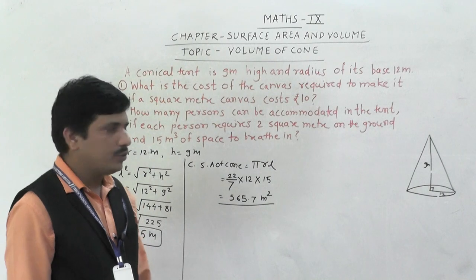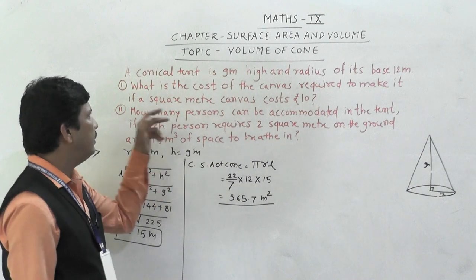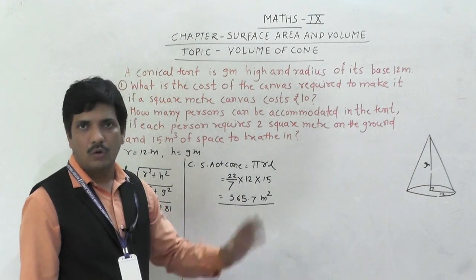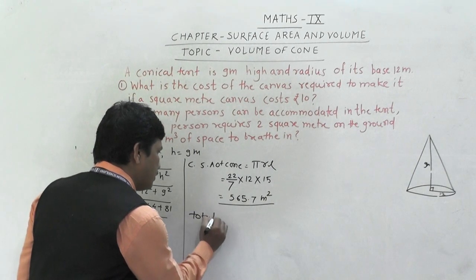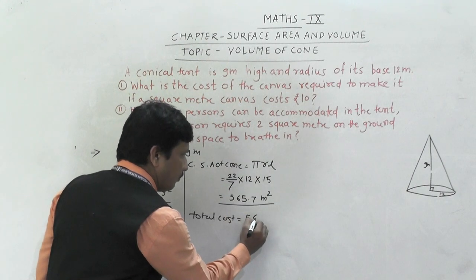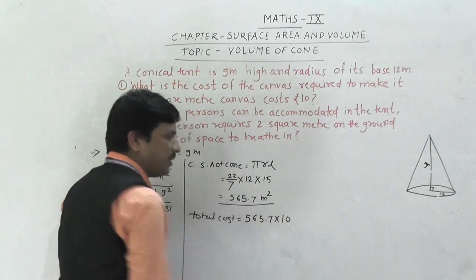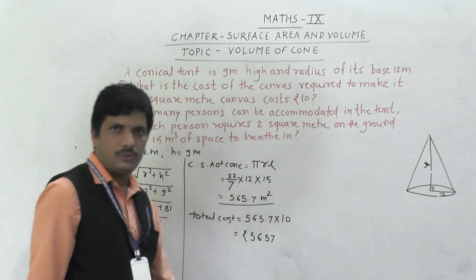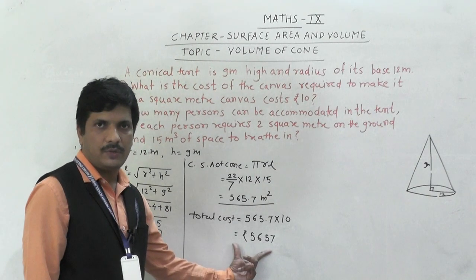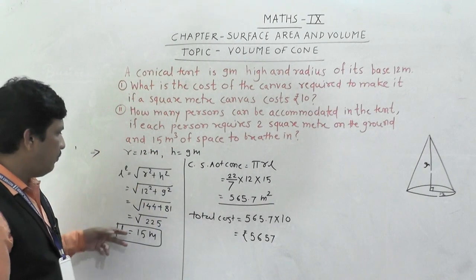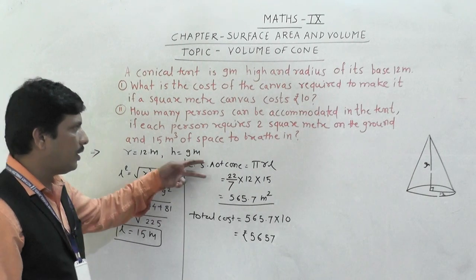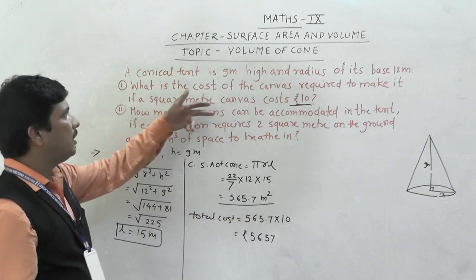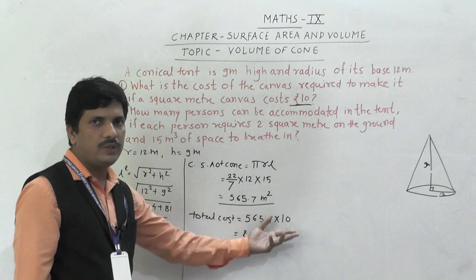So the first answer is rupees 5657. To summarise: using radius and height we found slant height = 15 m, then CSA = πrl = 565.7 m². Multiplying by the cost of rupees 10 per square meter gives total canvas cost of rupees 5657.